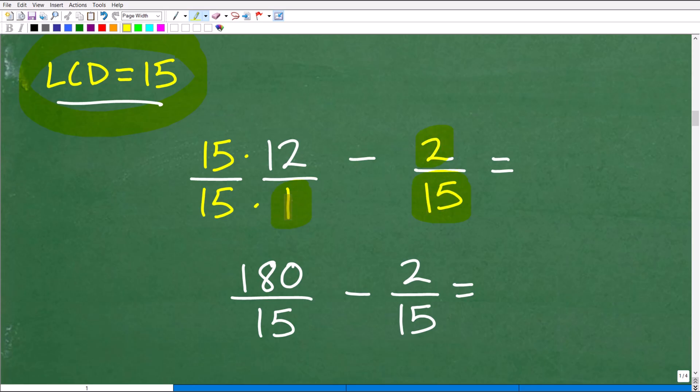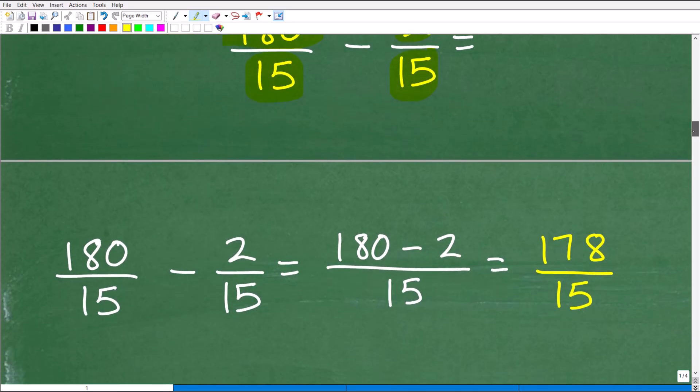So how do we get a one to turn it into a 15? Easy. Just multiply it by a 15. So 15 times one is of course 15, but we just can't multiply 15 by the denominator. We're going to also have to multiply 15 by the numerator. So anytime you're rewriting a fraction and you're multiplying by one particular number, you're going to have to multiply both the denominator and numerator by that same value. All right, so 15 times 12 is of course 180. So now we're down to 180 over 15 minus 2 over 15. Let's go ahead and fix this up now.